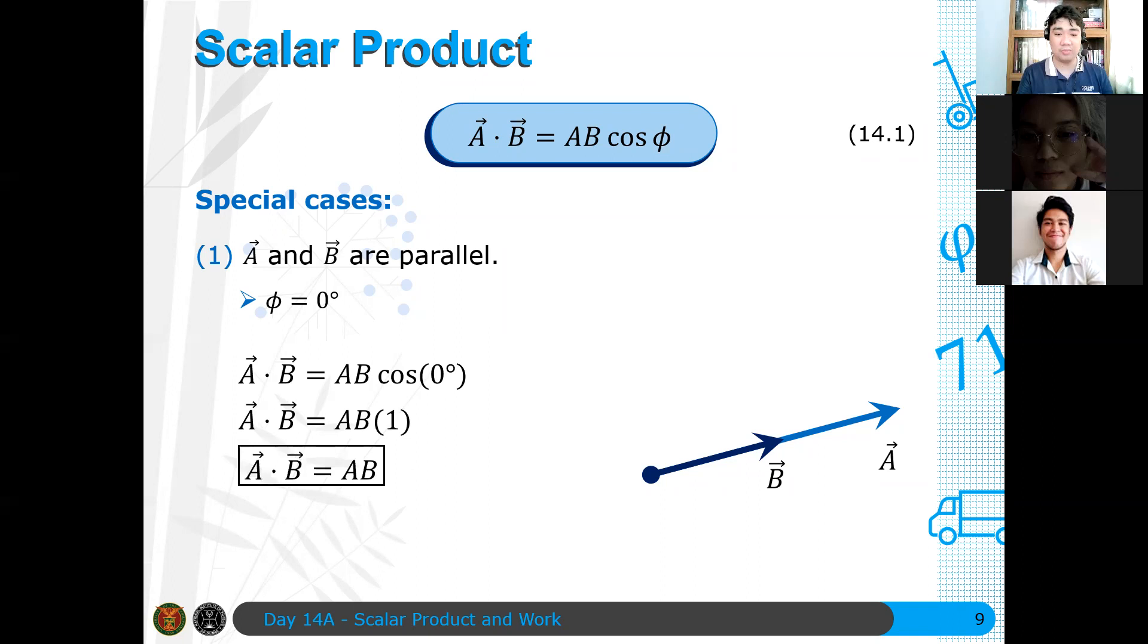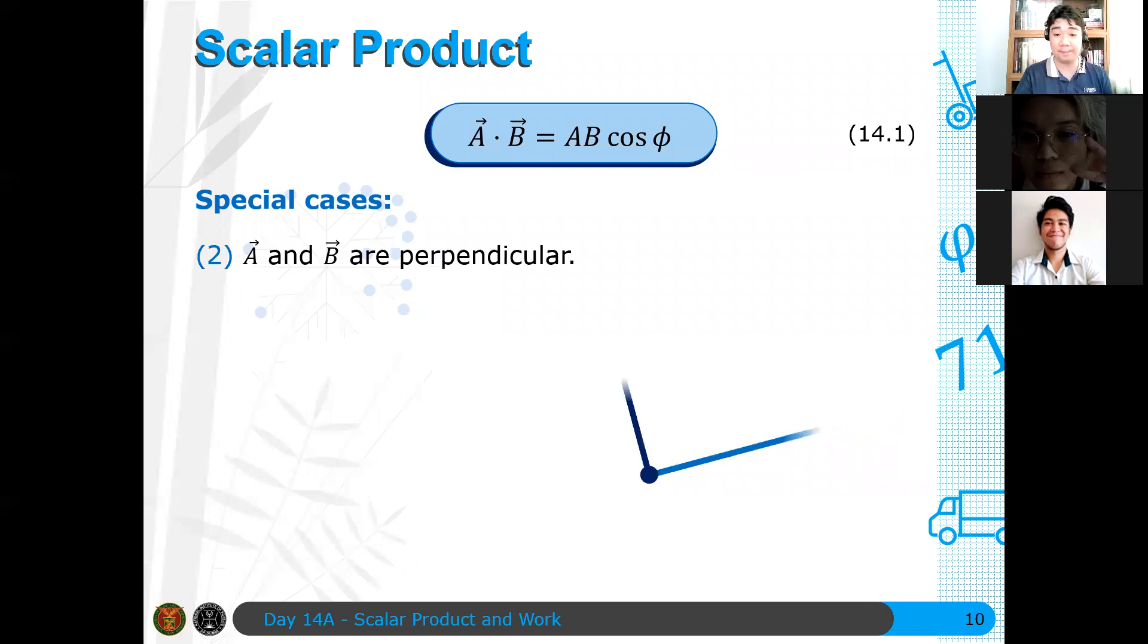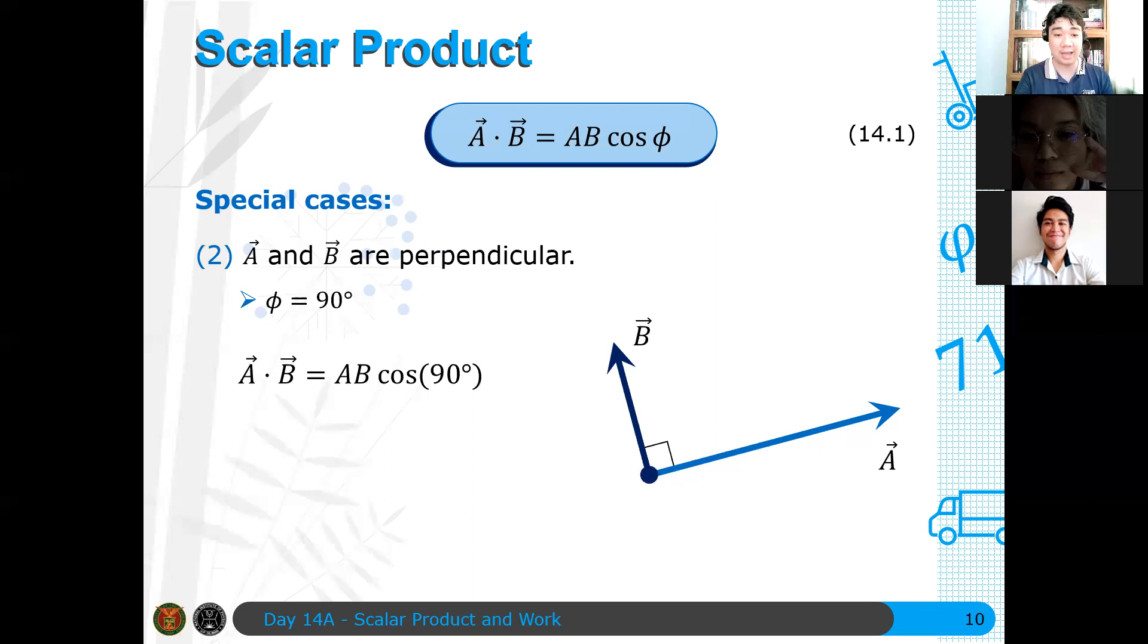Now, if a and b are perpendicular, so, for example, a and b are like this one, the angle between them is 90 degrees. Then, of course, phi is 90 degrees. We got a dot b is ab cosine 90 degrees. But, what is cosine of 90 degrees? Zero. Therefore, a dot b is equal to zero. In fact, you can define two perpendicular vectors. You can say this definition: Two vectors are perpendicular if and only if their dot products vanish. The point here is if the dot product is zero, then a and b are perpendicular or orthogonal to each other.